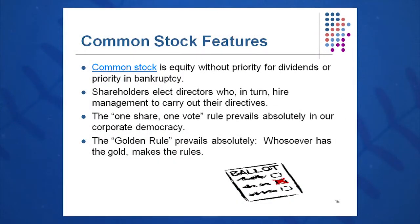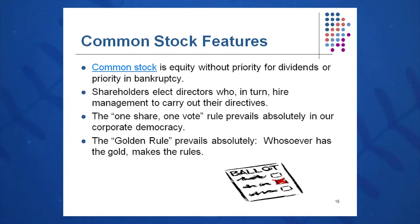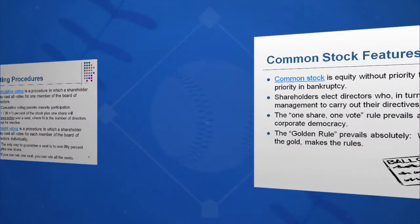Shareholders are residual owners. They elect directors who in turn hire management, who hire and fire people to carry out their directives. One share, one vote is the rule of corporate democracy. The golden rule says that he who has the gold makes the rule — so the more shares you have, the more voting influence you have.